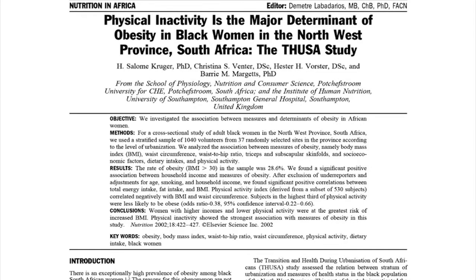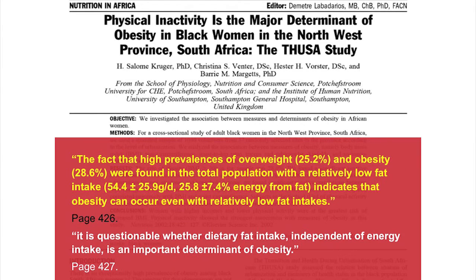One of the studies that Professor Kruger and Forster have also published is related to physical inactivity, and that's really important in determining whether it's linked to obesity. They noticed that a high prevalence of overweight and obesity was found in the total population despite a relatively low fat intake — energy intake in this population was only 26% from fat. They drew the conclusion that obesity can occur even with relatively low fat intakes.